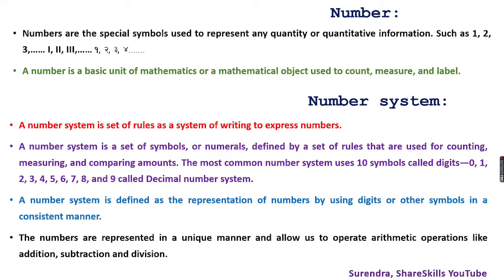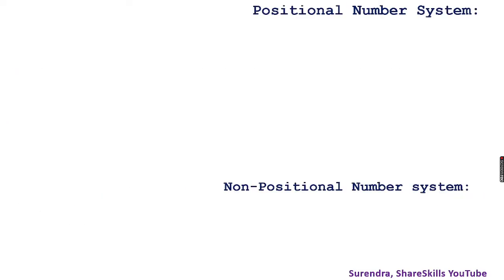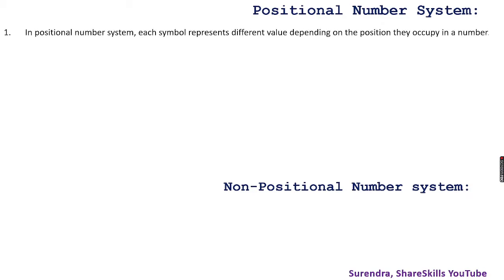Number systems are represented in a unique manner and allow us to perform all mathematical operations — like addition, subtraction, division, and multiplication. Number systems are broadly divided into two types according to positional value: positional number system and non-positional number system.